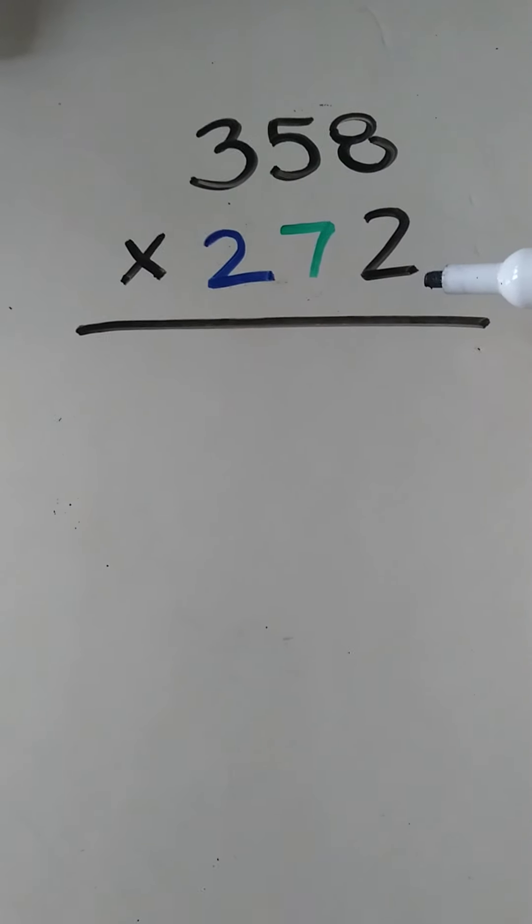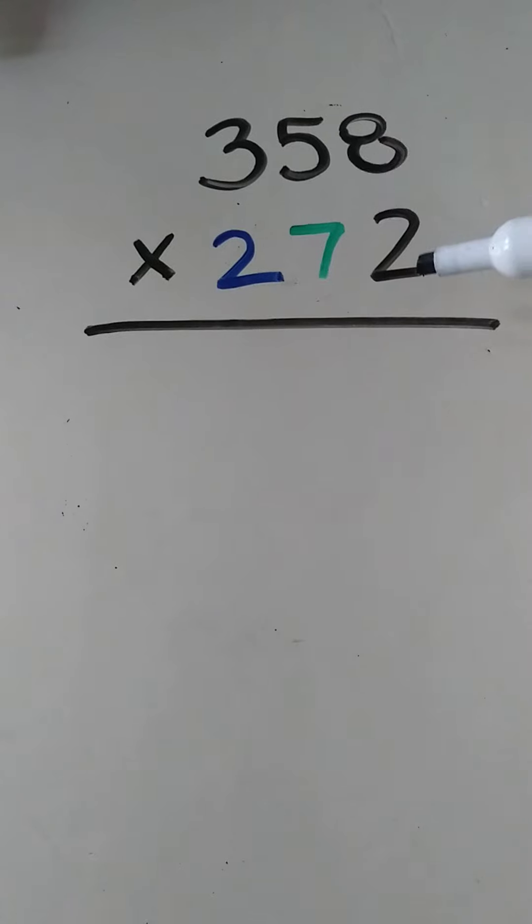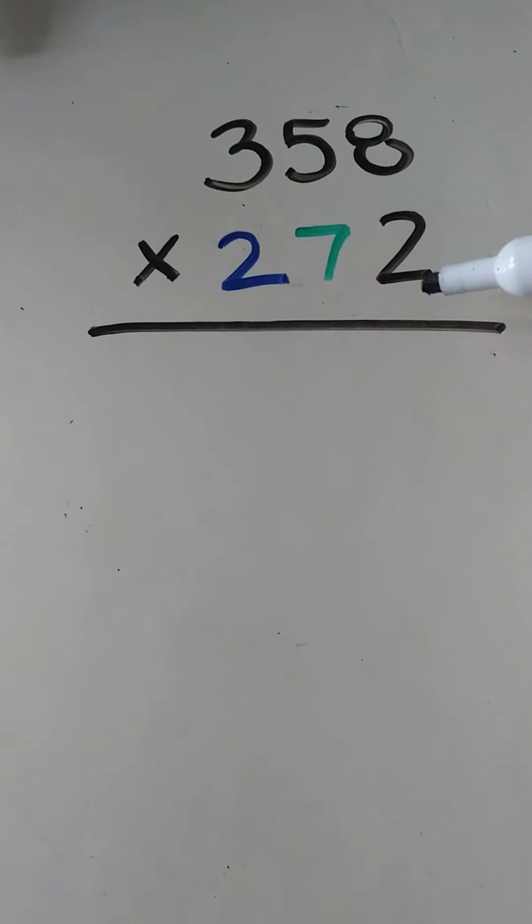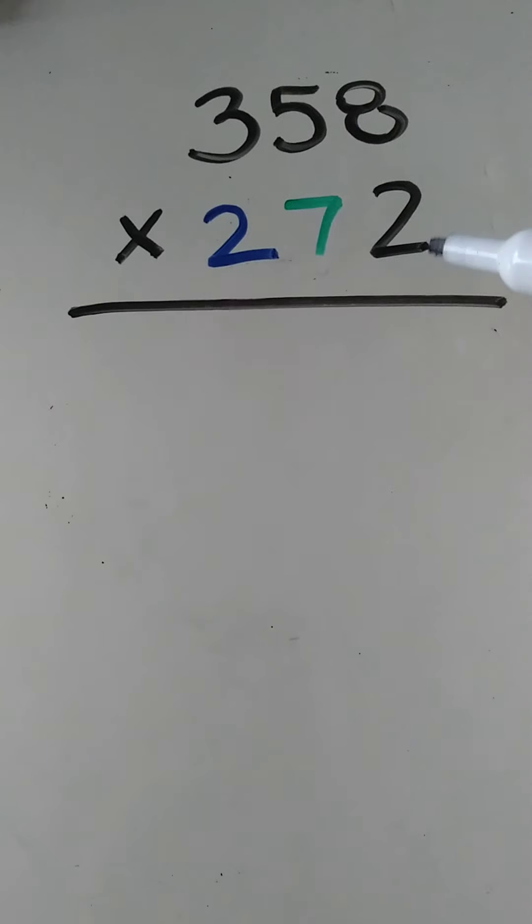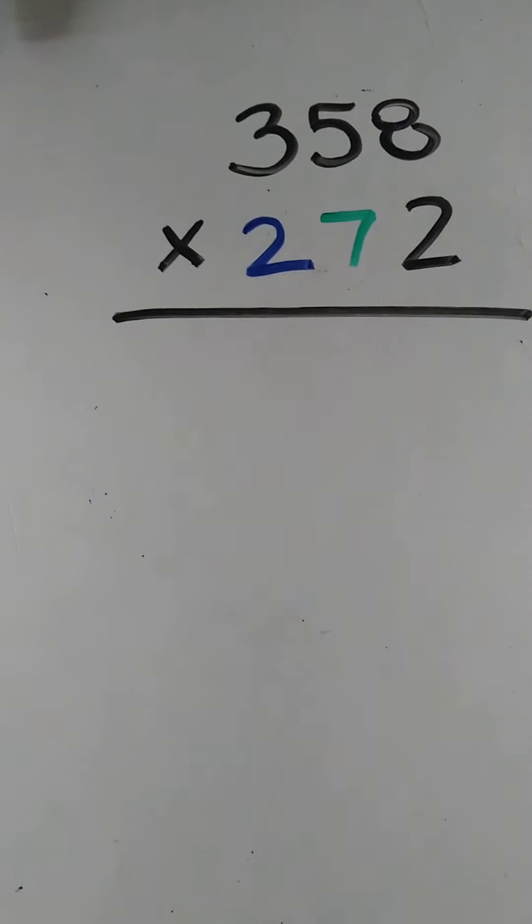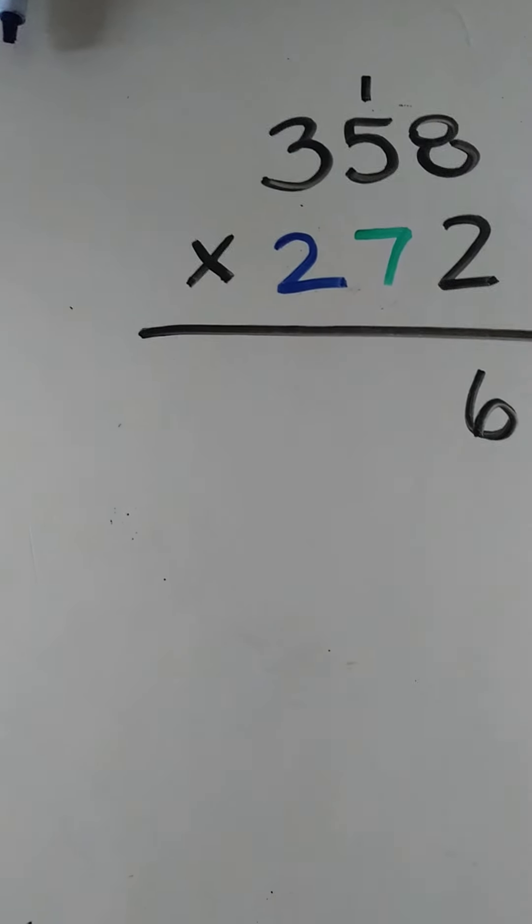So basically we're doing 358 times 2. So again, just like the other videos, we're going to start multiplying the ones place and the ones place, and then the ones and the tens, and the ones and the hundreds place, and so on.